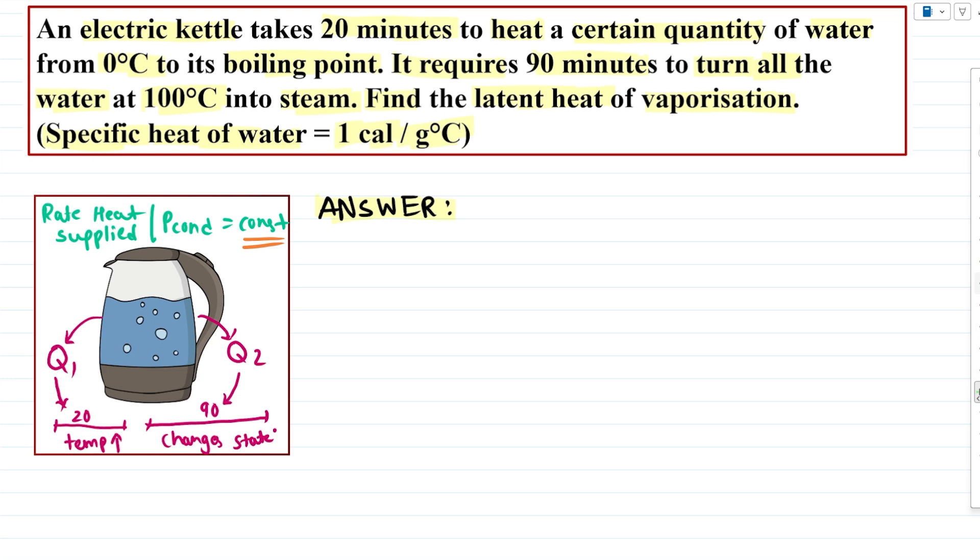Now when we have understood this, let's try to solve our question. First, this question we are not going to write in the conventional format because it requires a lot of assumptions and statements. Let heat supplied by the kettle: Q1 is the heat supplied for 20 minutes. Let's say we call it T1 equal to 20 minutes.